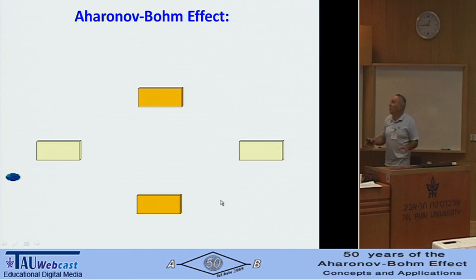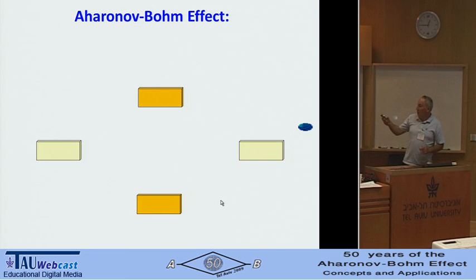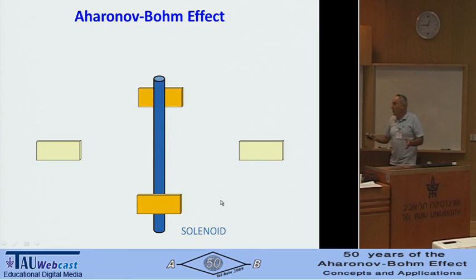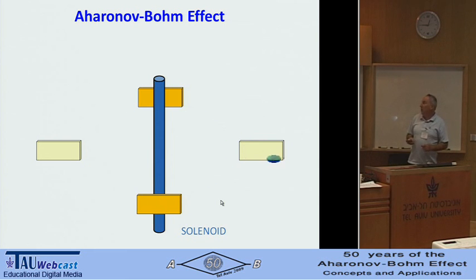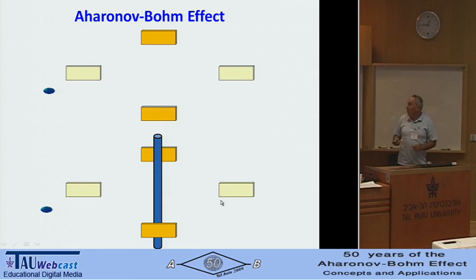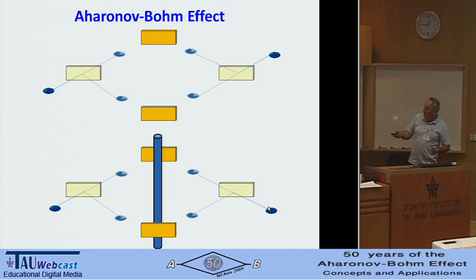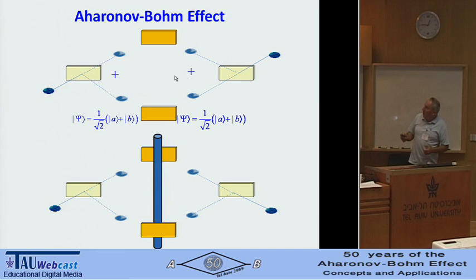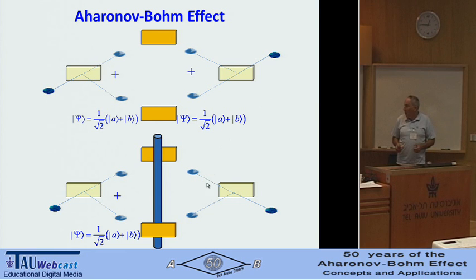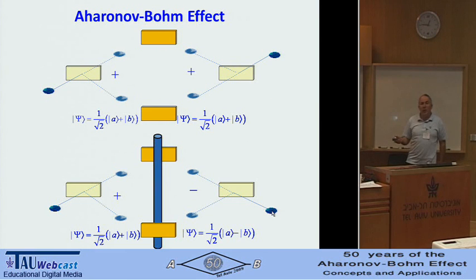What is the Aharonov-Bohm effect in this language? We have the same Mach-Zehnder interferometer with a charged particle, tuned so it goes one way. Then we introduce a solenoid inside. The solenoid has no field outside, but when we send a particle, it will go the other way. Two identical interferometers, both sending from the same side — we expect them both to go up, but the solenoid makes it go down. The solenoid somehow changed the phase from zero to pi.